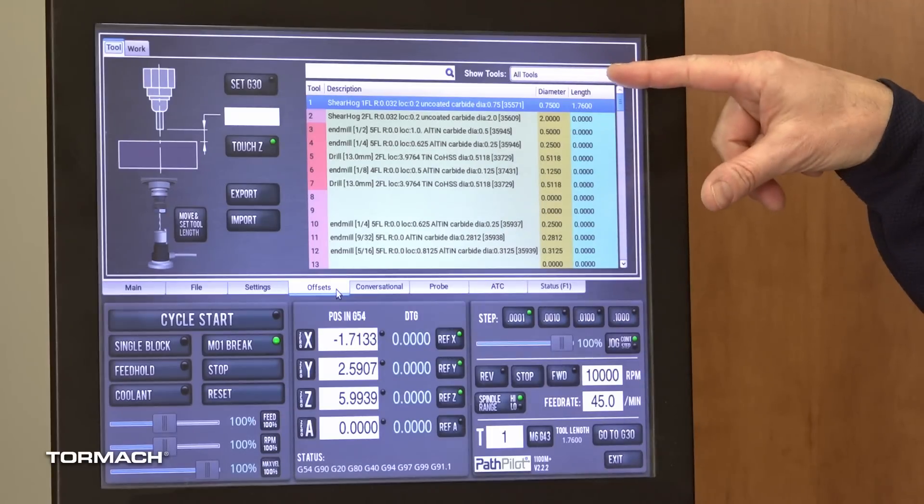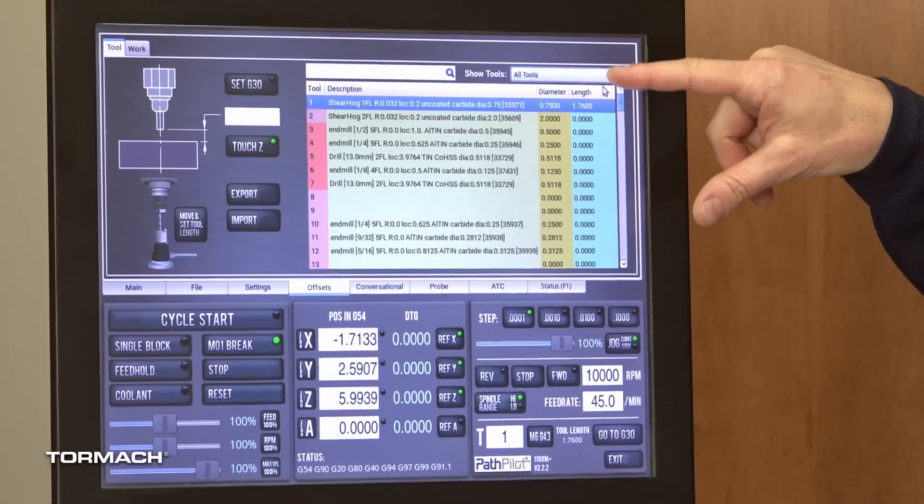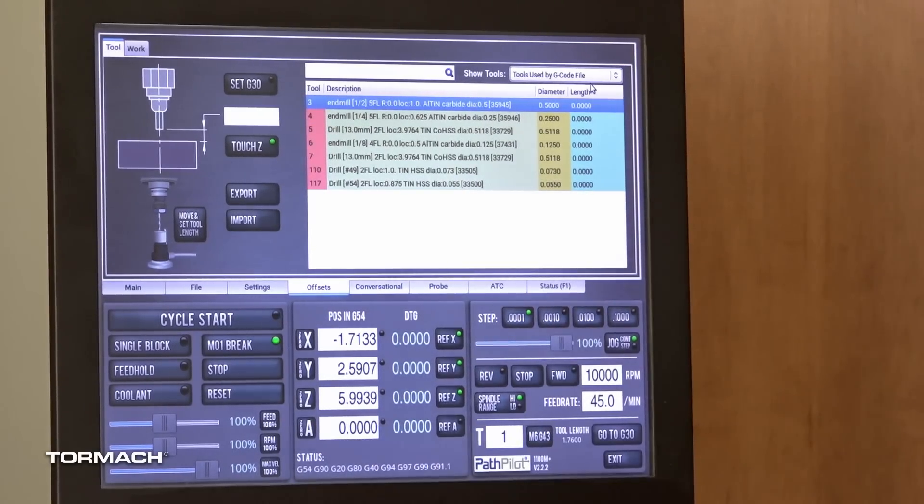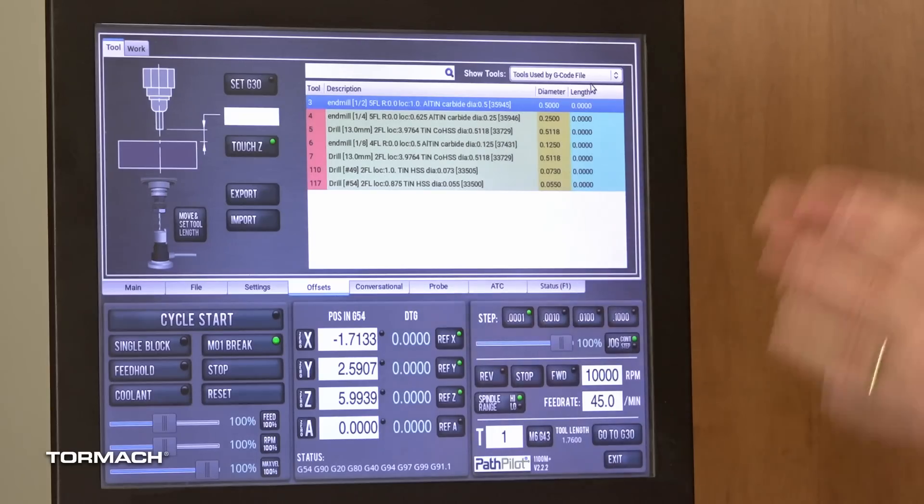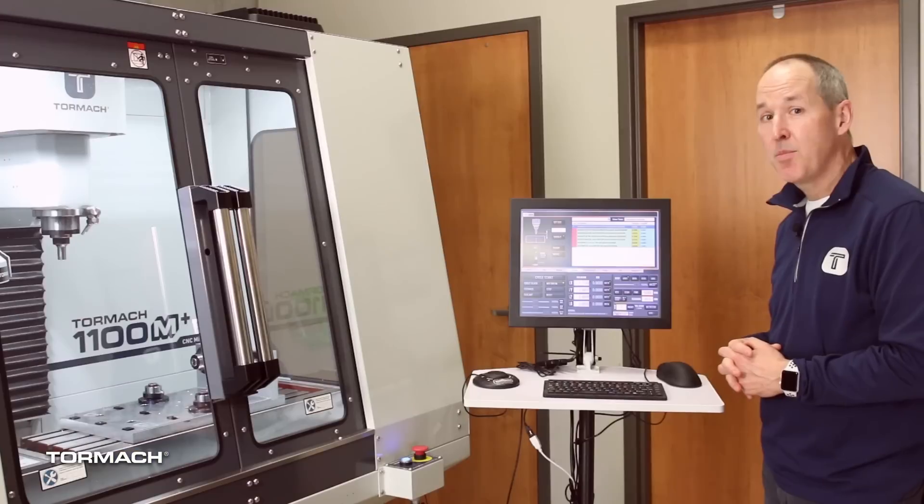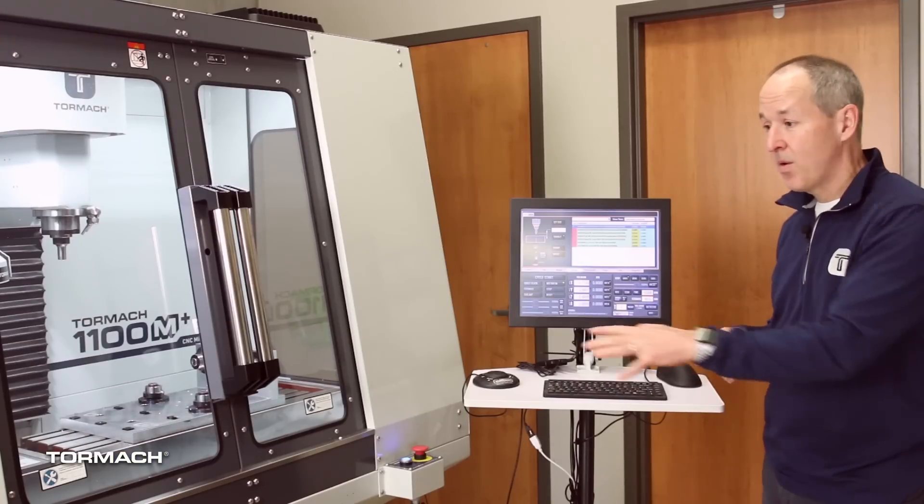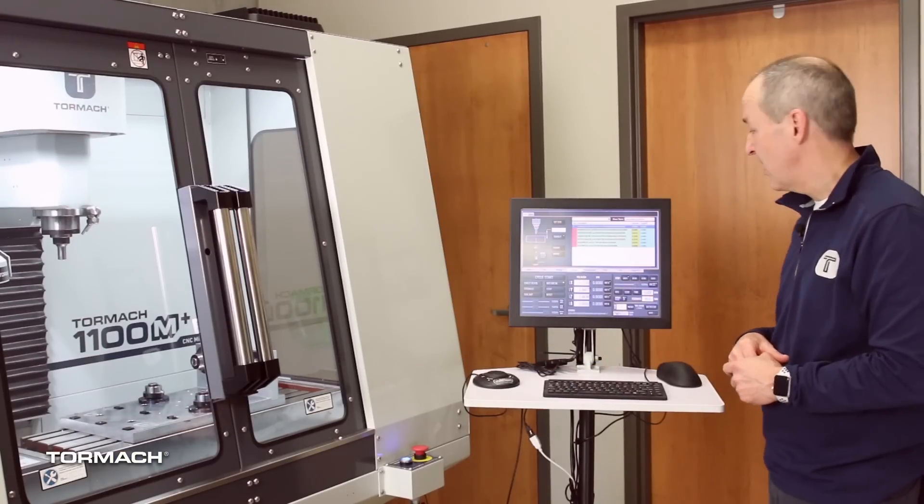But we also added a new combo box up here that you can drop down and say, Hey, show me just the tools used by the current gcode file. And we collapse and pull out all the rows that aren't used. So it lets you zero in and focus on what are the tools that I need to have ready, prepped in the ATC or sitting in my holders for this job.